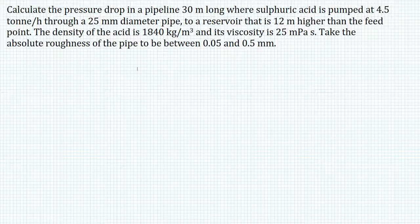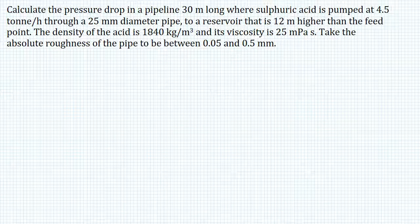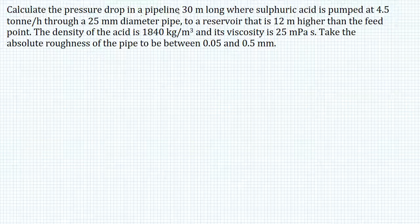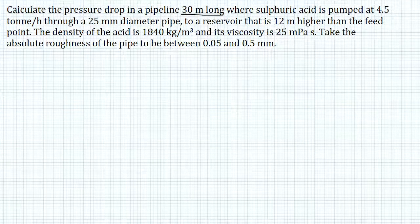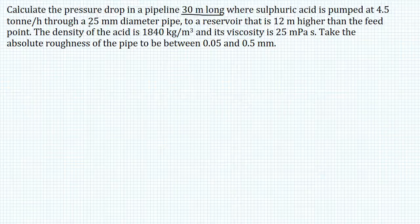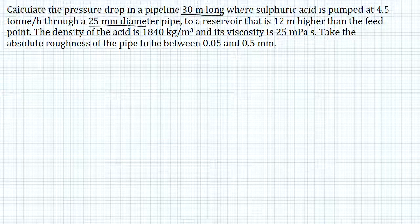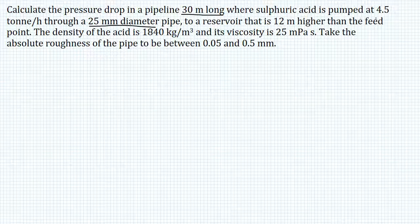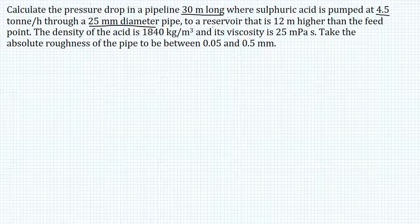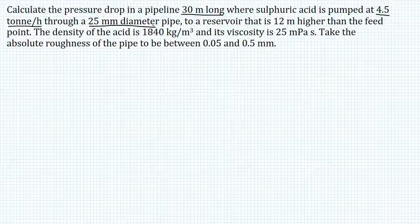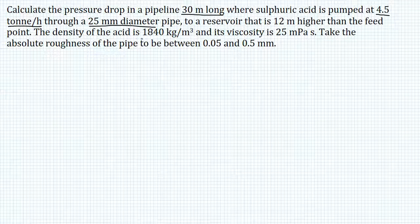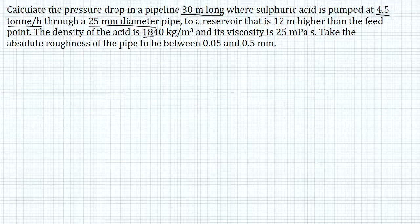In this screencast, we'll calculate the pressure drop in a pipeline, knowing that the length of the pipe is 30 meters, its diameter is 25 millimeters, and we also know the mass flow rate of the fluid going through, we know its density here, and the viscosity.